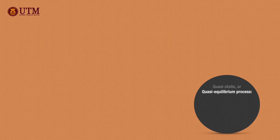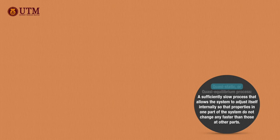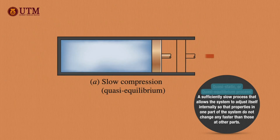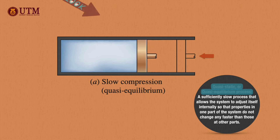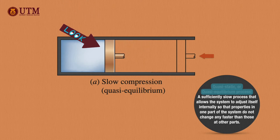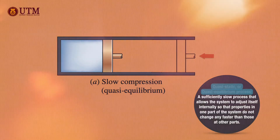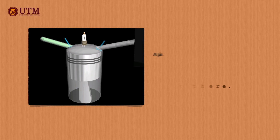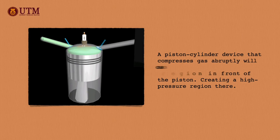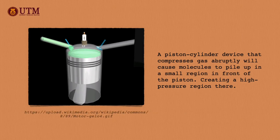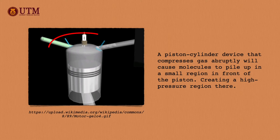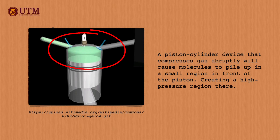When a process proceeds in such a manner that the system remains infinitesimally close to an equilibrium state at all times, it is called a quasi-static or quasi-equilibrium process. A quasi-equilibrium process can be viewed as a sufficiently slow process that allows the system to adjust itself internally so that properties in one part of the system do not change any faster than those at other parts. When a gas in a piston-cylinder device is compressed suddenly, the molecules near the piston's face will not have enough time to escape, and they will pile up in a small region in front of the piston, creating a high-pressure region there.